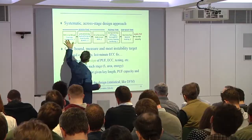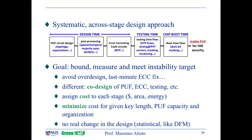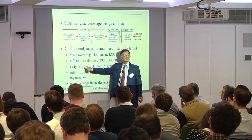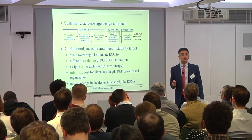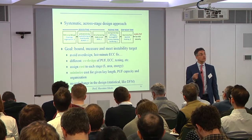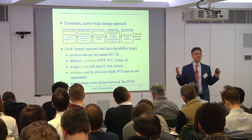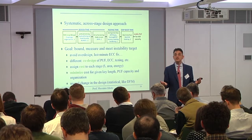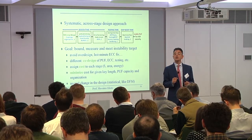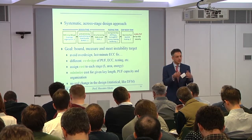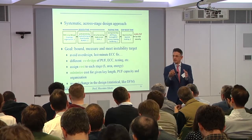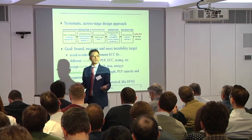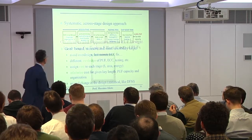What you want is a cross-stage design approach where you think of the PUF as a system, not as completely separate blocks. This will avoid over-design and over-margining. You assign a cost to each decision — shall I do temporal majority voting? Shall I do temperature compensation? — each has a cost in area and energy. This boils down to a simple optimization problem: given a model of area, energy, and error rate, optimize to hit a certain key error rate target with minimum cost. The cost function depends on the application.